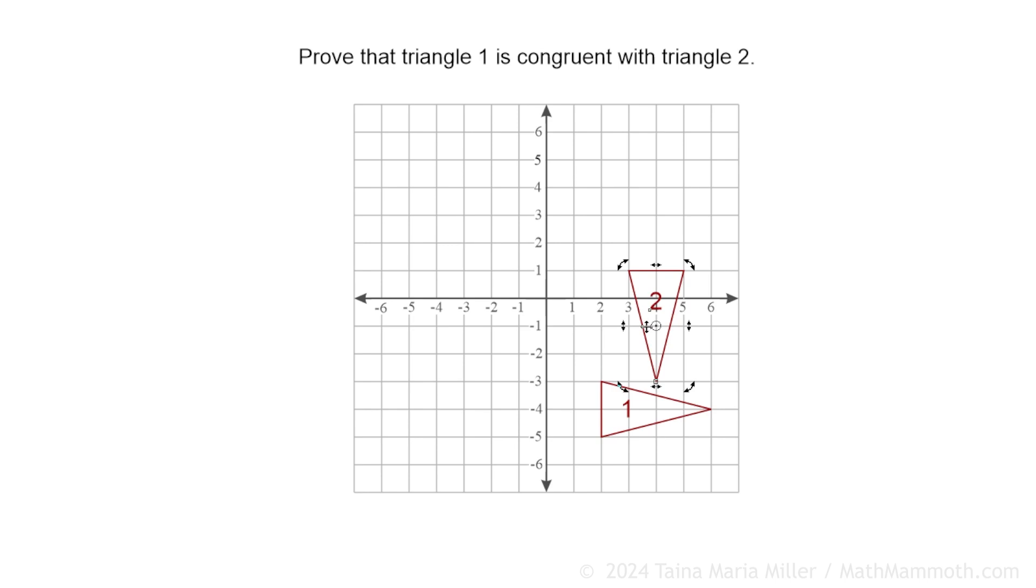Once again, the rotation could happen around many different points and it'll still work. If I choose this one and rotate it 90 degrees. So that was 90 degrees counterclockwise around that vertex, around point 3,1. Then after that, I only need to translate it and I need to specify how much I translate it for my proof to be complete.